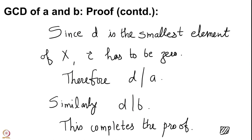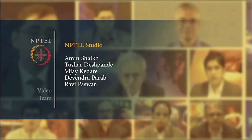Let us quickly recall what we have done. We looked at the division algorithm, which gave us that a equals b·q plus r where r is strictly less than b and ≥ 0. Using this we proved that there is a GCD — the greatest common divisor — of any two natural numbers. Moreover, this GCD is of the form a·α plus b·β where α and β are integers. We stop here for the moment. See you in the next lecture. Thank you.